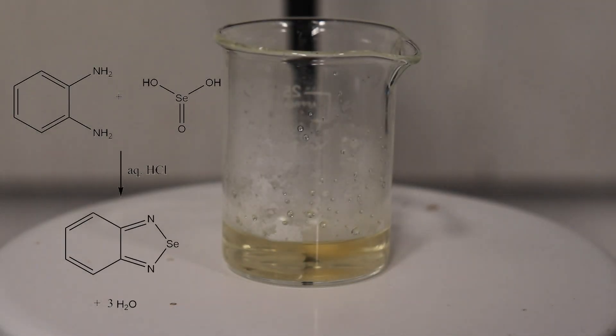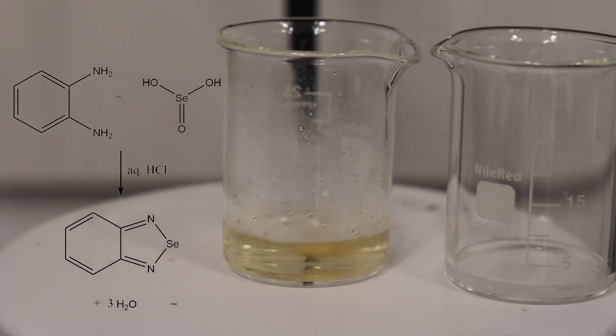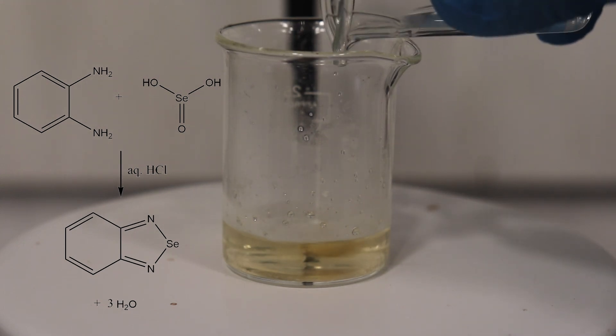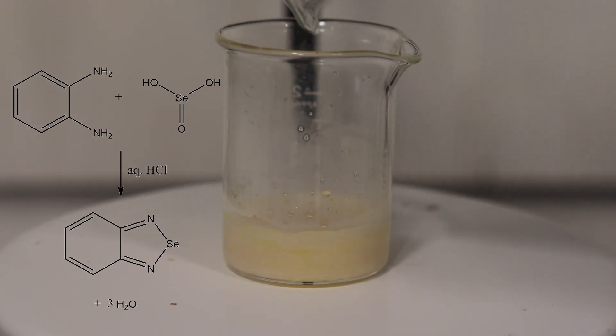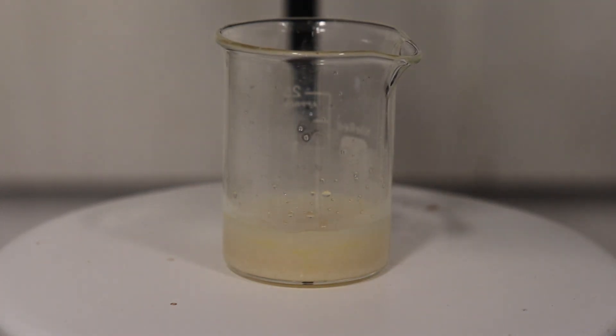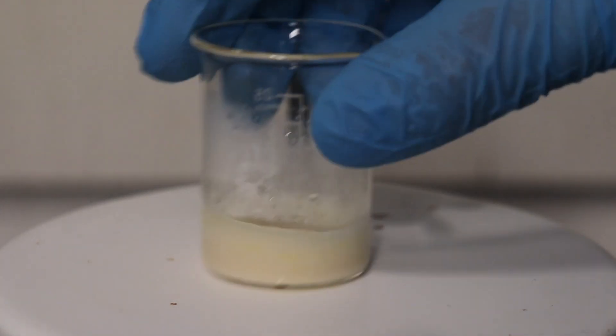For our reaction, the selenus acid solution is poured into the orthophenylenediamine dihydrochloride solution, followed by the immediate precipitation of our product. You can then immediately filter this precipitate, or wait an additional 2 hours to maximize yield, but I just went on and filtered immediately.